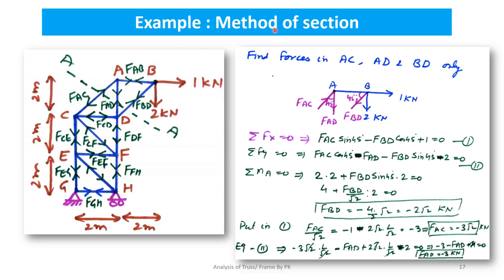Next, we solve the same example using the method of section, which is used when we need forces only in a few members — here, members AC, AD, and BD. We pass a section line that cuts only these three members, dividing the truss into a lower (right) part and an upper (left) part. Both parts are in equilibrium under the external forces, reaction forces, and forces in the cut members.